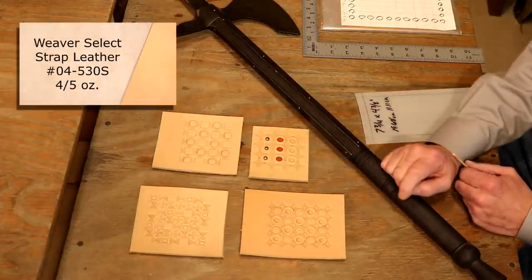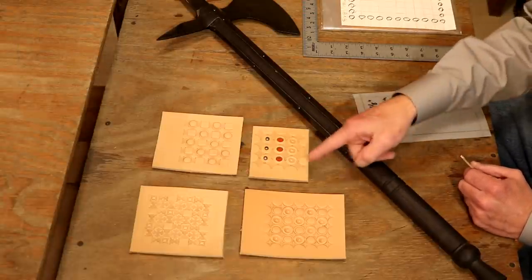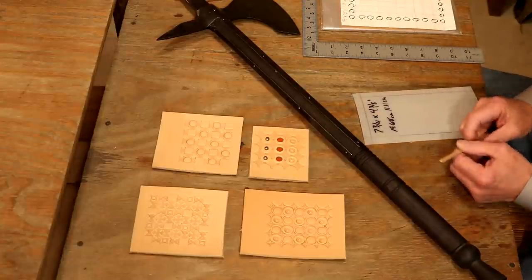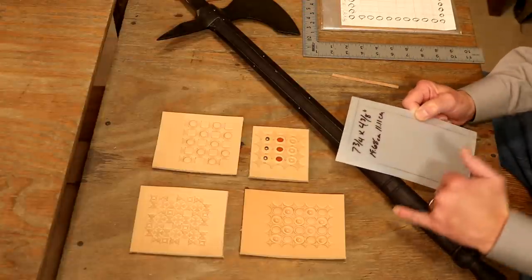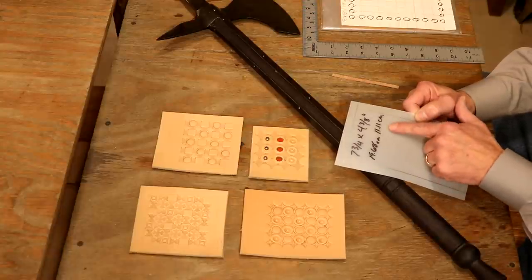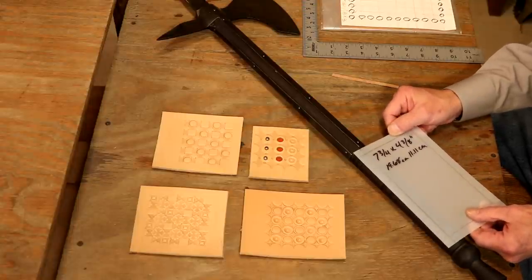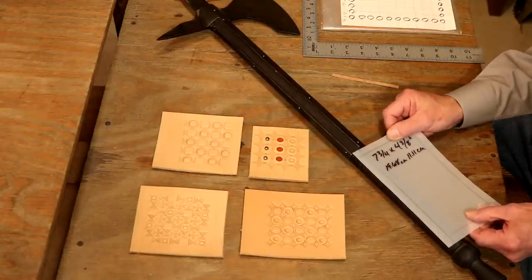We're going to go with a 4 to 5 ounce Weaver Select Natural Veg. Love this because we're going to stamp it. But also, if we've got a larger hand, smaller handle, let's bump that weight up a little bit. Let's make this axe comfortable to the size of our hand. So, with this, I've got a pattern here. We're going to go 4 and 3 eighths inch or 11.11 centimeters for our circumference. On our length, we're going to go 7 and 3 quarters or right about 19.68 centimeters.